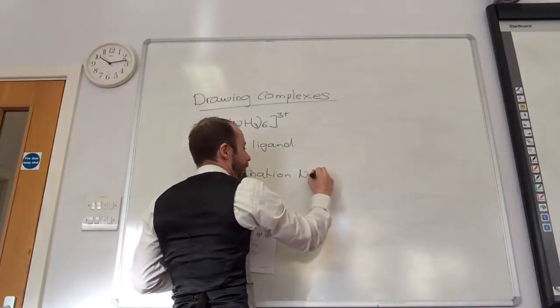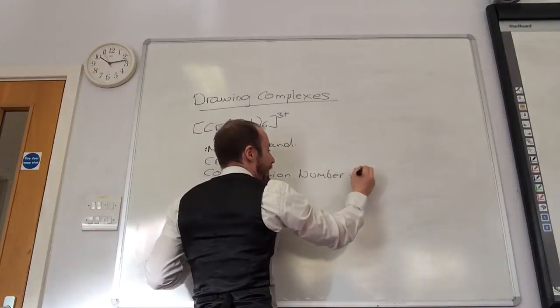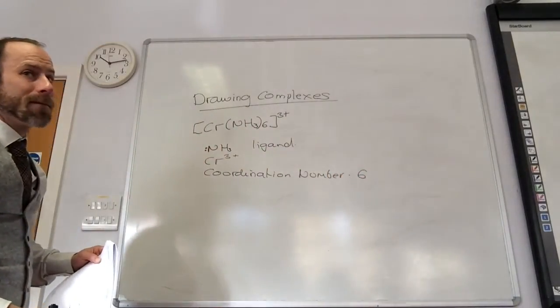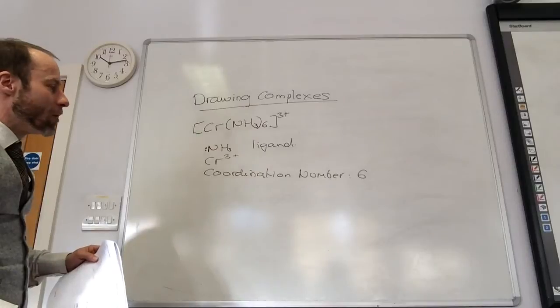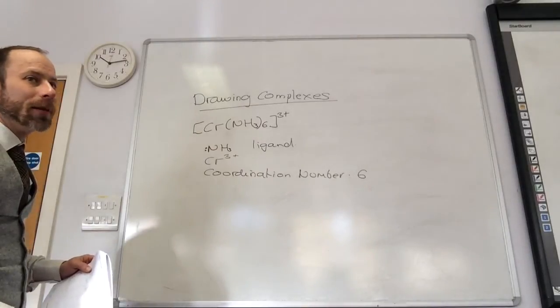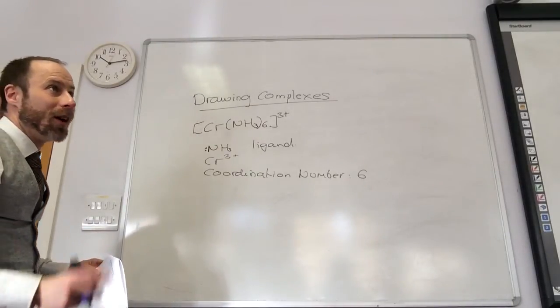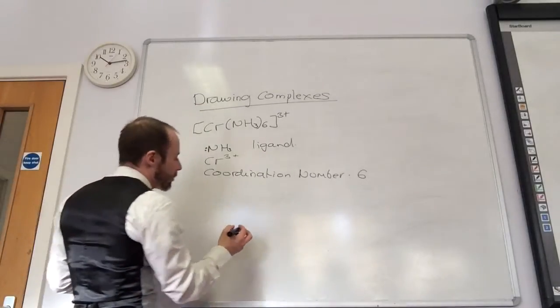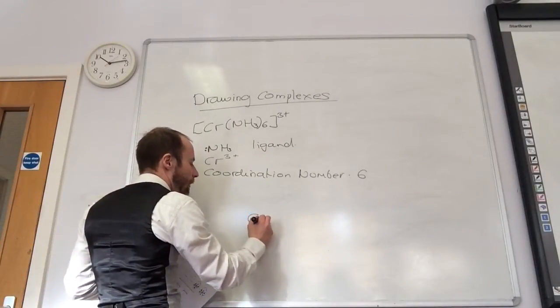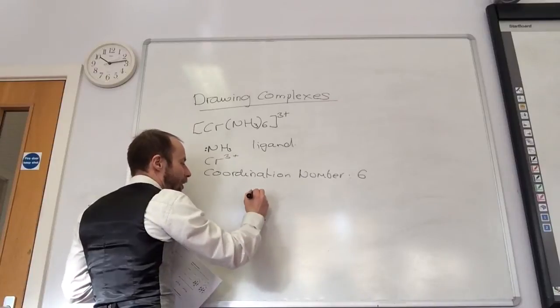I have got six monodentate ligands. Yeah. Therefore, what will be the shape? Octahedral. Octahedral. Yeah. So let's draw him. Chromium in the middle.